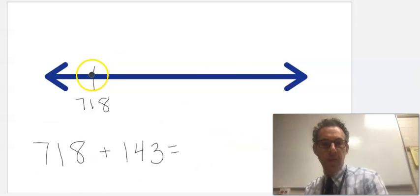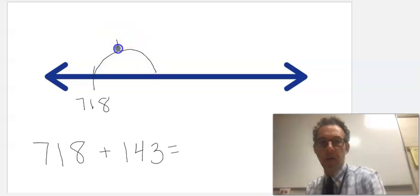And it works for larger numbers as well. For 718 plus 143, I'm going to start at 718. I'm going to jump by 100 to get to 818.